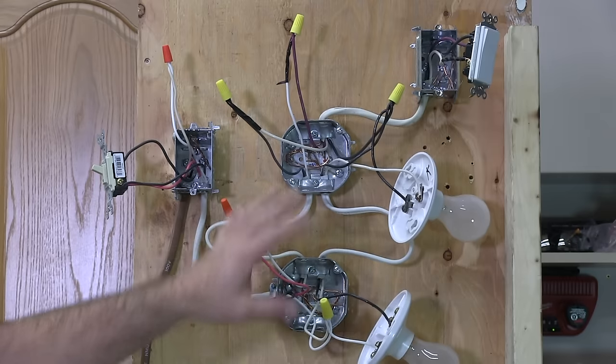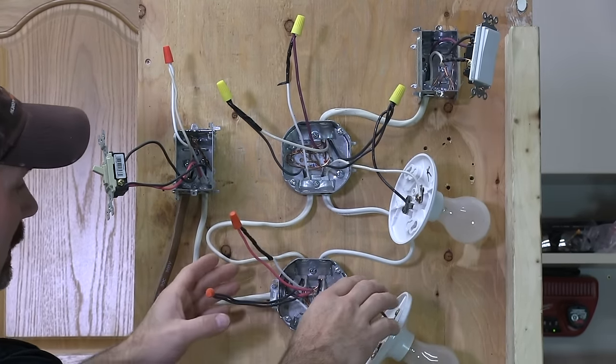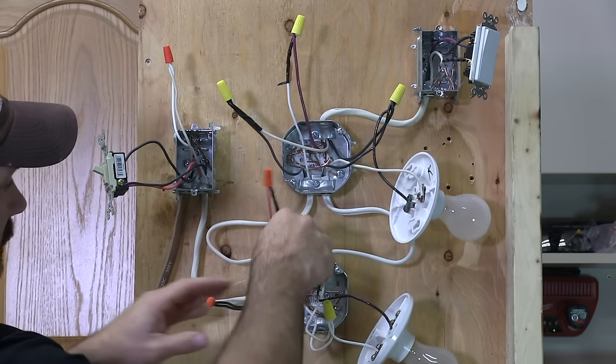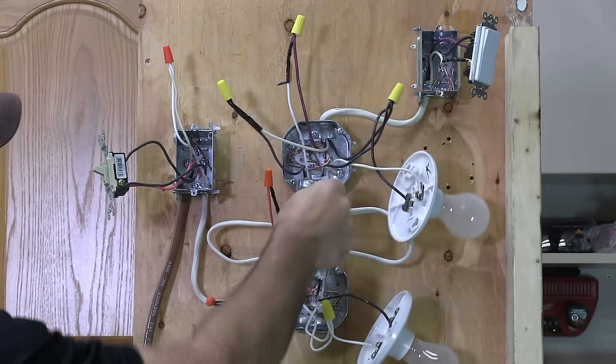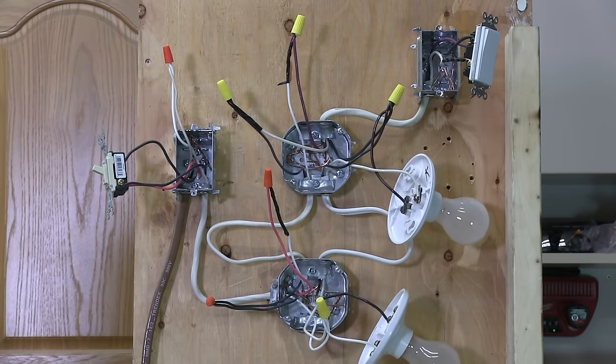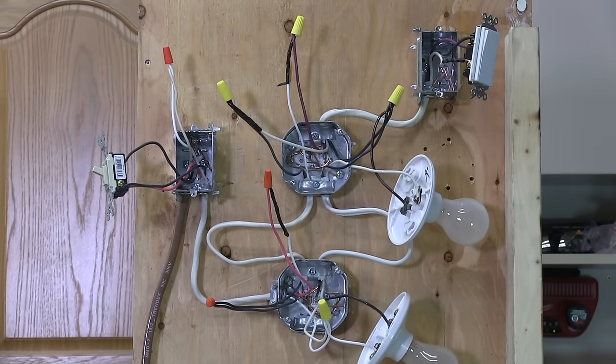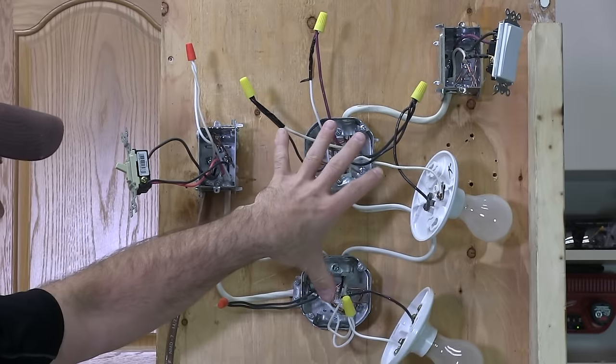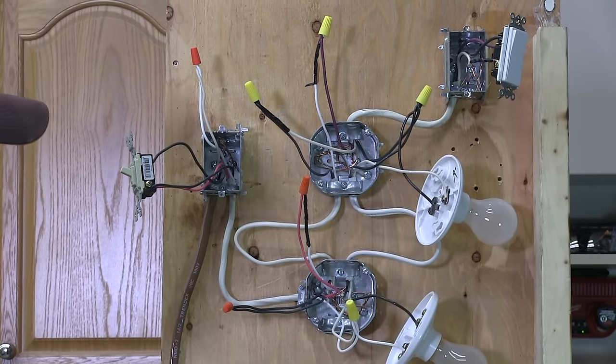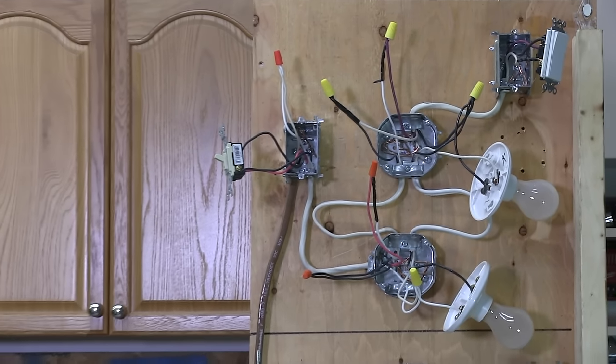Now if we only had one light in that circuit, you wouldn't need all of this. You obviously wouldn't need this box and you wouldn't need these two here either. It would just go directly up, right up to that next switch. So just depending on the situation you have, it just kind of varies a little bit in this center area between the lights, as far as what wires go where. I'll just plug that in so we can see that it works.